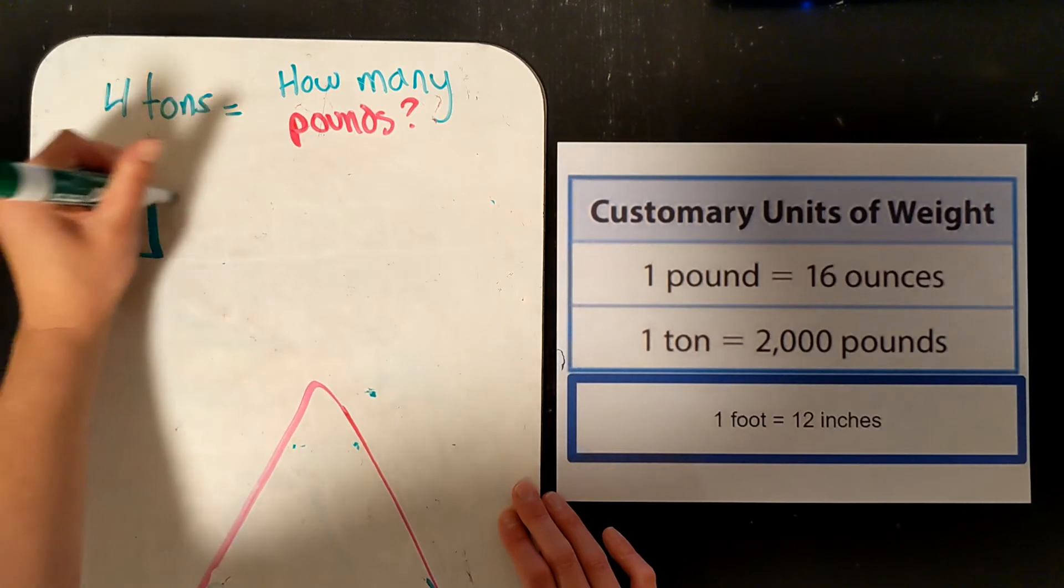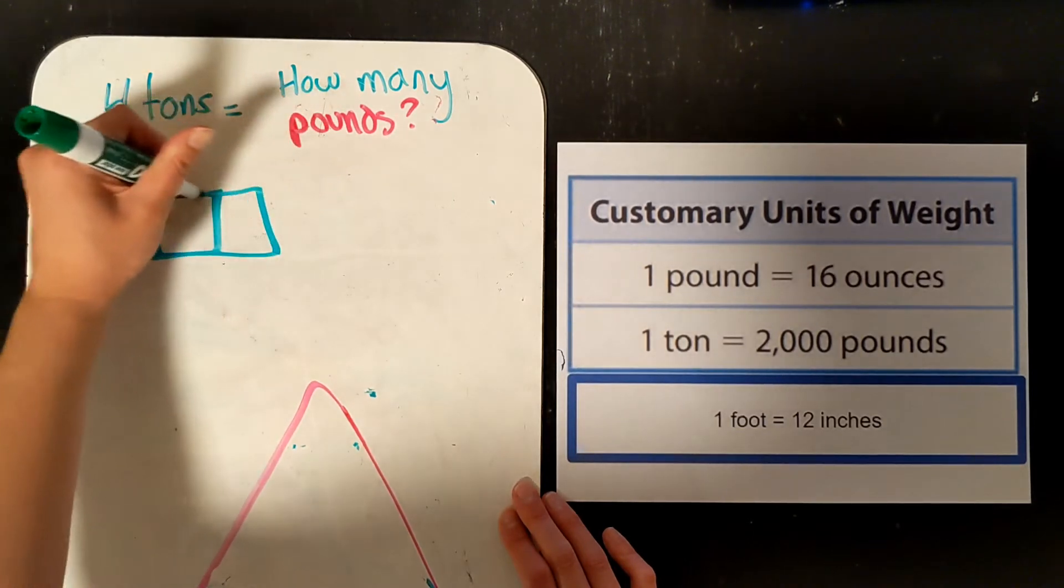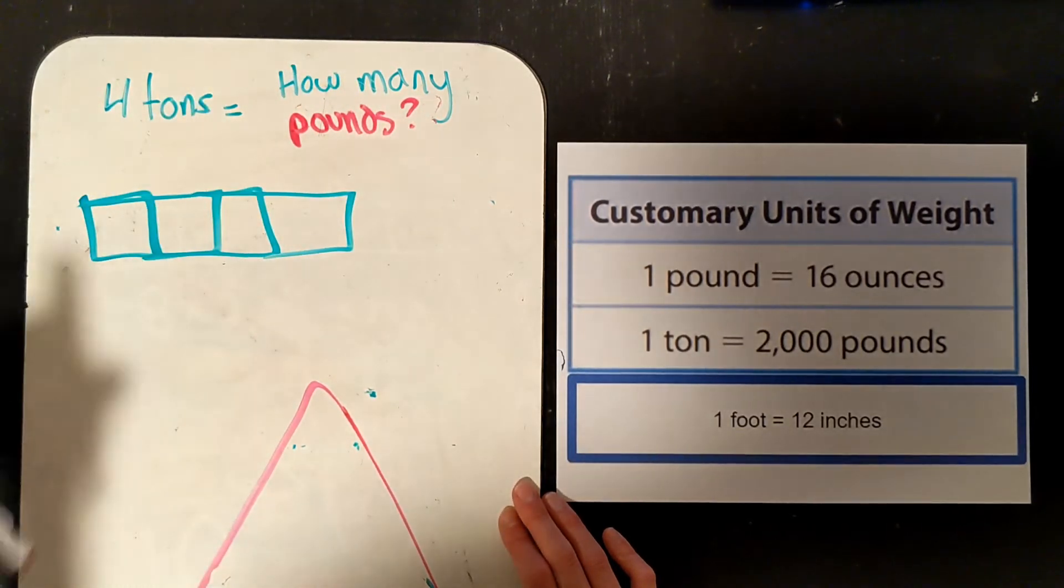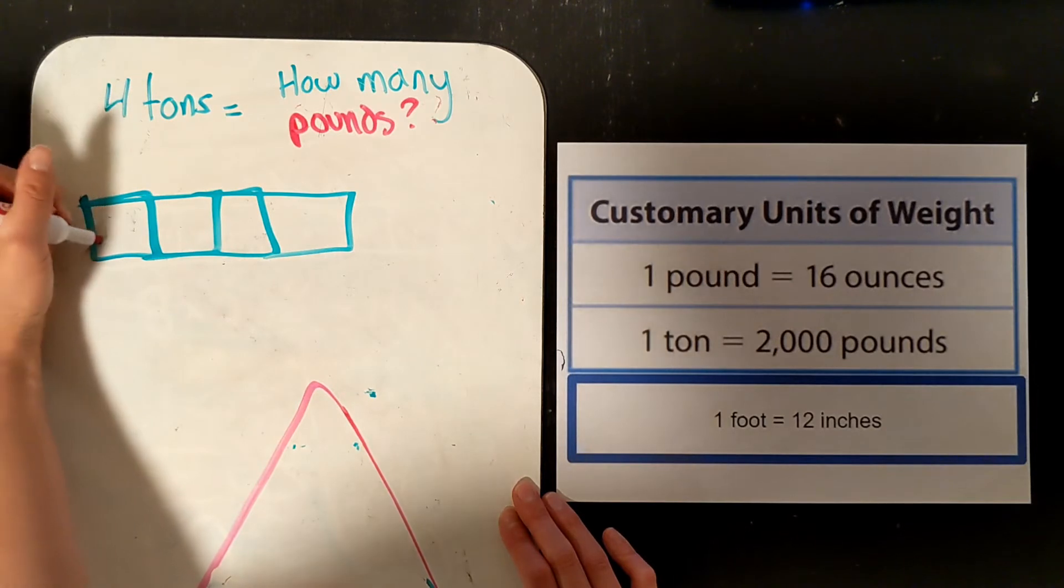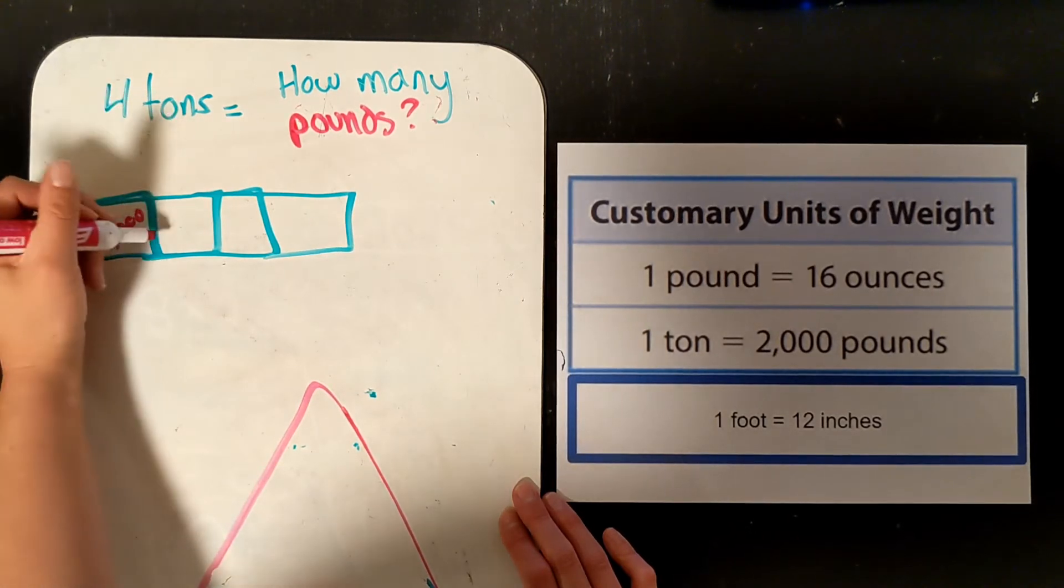So 1 ton would be 2,000. 2 tons would be another 2,000. 3, 4 tons. Each ton is 2,000 pounds according to our conversion chart.